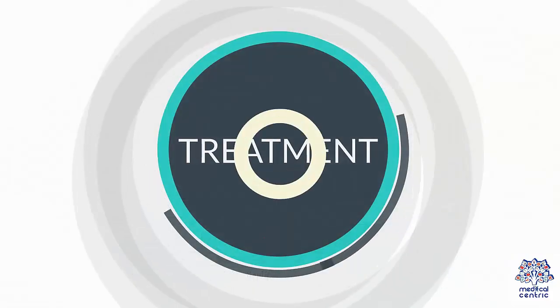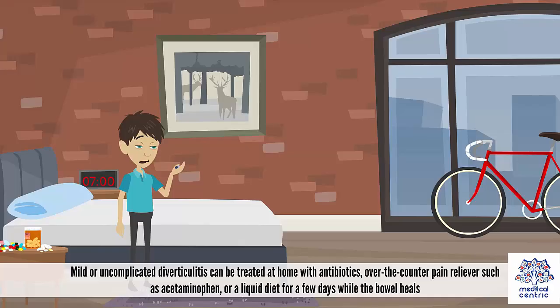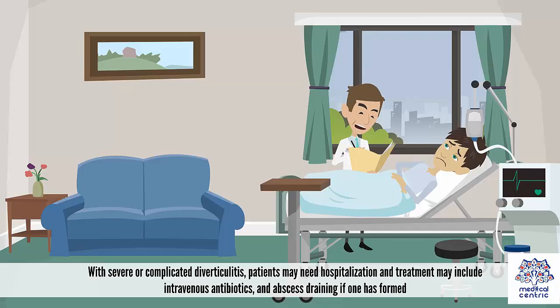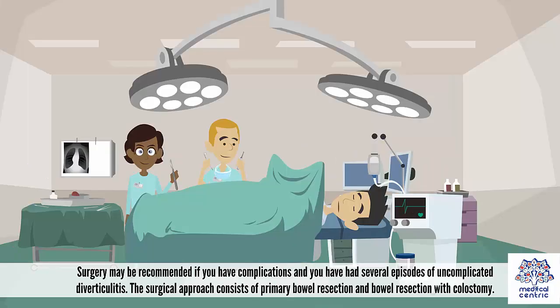Treatment may depend on the severity of symptoms. Mild or uncomplicated diverticulitis can be treated at home with antibiotics, over-the-counter pain relievers such as acetaminophen, or a liquid diet for a few days while the bowel heals. With severe or complicated diverticulitis, patients may need hospitalization, including intravenous antibiotics and abscess draining if one has formed. Surgery may be recommended for complications or repeated episodes, and the surgical approach consists of primary bowel resection and bowel resection with colostomy.